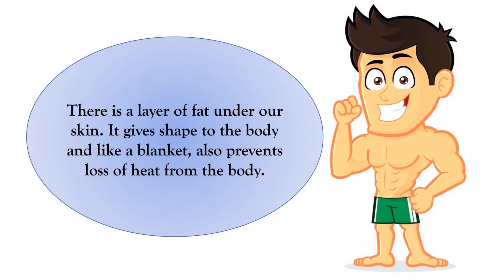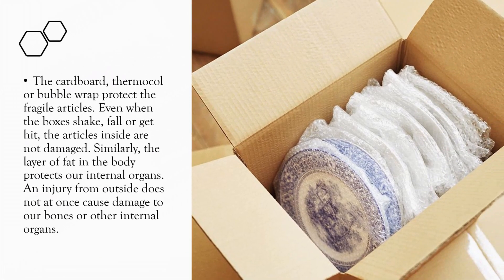There is a layer of fat under our skin. It gives shape to the body and, like a blanket, also prevents loss of heat from the body. Just as cardboard, thermocol or bubble wrap protect fragile articles — even when the boxes shake, fall or get hit, the articles inside are not damaged — similarly, the layer of fat in the body protects our internal organs. An injury from outside does not at once cause damage to our bones or other internal organs.